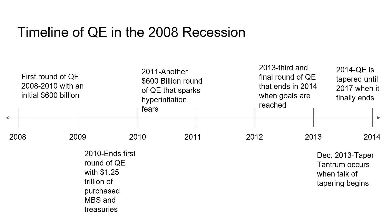Looking at what QE has done in the past — it's only been used before in 2008. It's a relatively new tool. The first round of QE in 2008 started with an initial $600 billion in treasuries and mortgage-backed securities, but ended up being about $1.25 trillion because of the sheer amount of toxic mortgage-backed securities that needed to be purchased to save the banks. In 2011, they started another round because the recession was still leaving scars — another $600 billion round — but it spiked hyperinflation fears, sending gold and silver to high levels because people were afraid the dollar would lose its value.